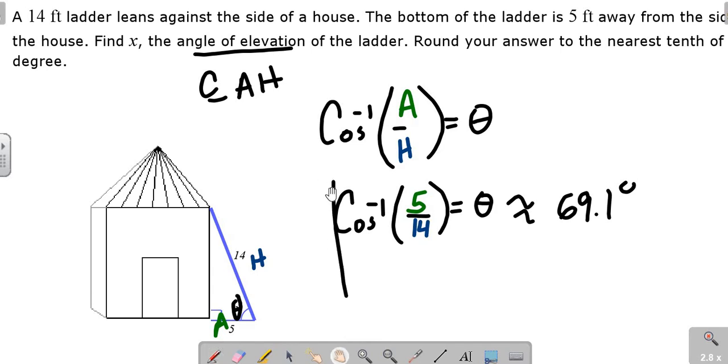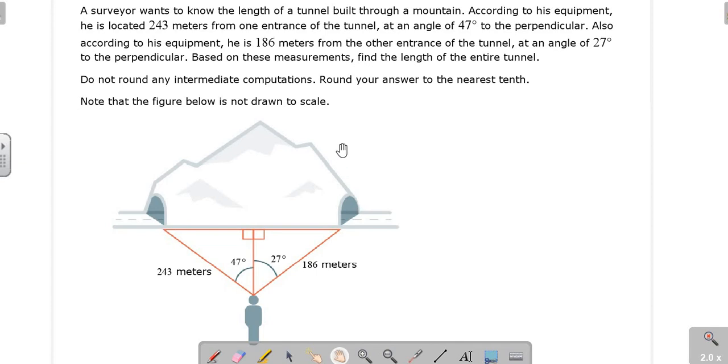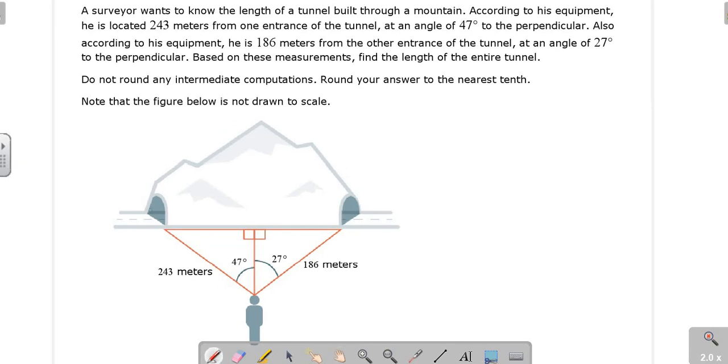Last one requires multiple use. Do not be intimidated. This is very easy on your calculators. It says a surveyor wants to know the length of a tunnel built through a mountain. So our ultimate goal is this tunnel length, which is this squiggle distance. According to his equipment, where he's standing is 243 meters from one entrance at an angle of 47 degrees to the perpendicular. Also, 186 meters to the other entrance with a 27-degree angle to the perpendicular. Find the length of the entire tunnel. Do not round any immediate answers. Round your final answer to the nearest tenth.